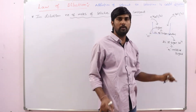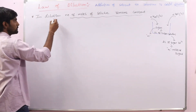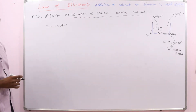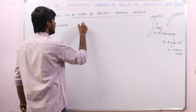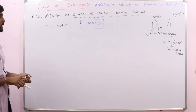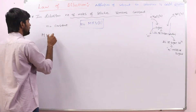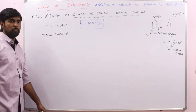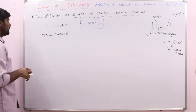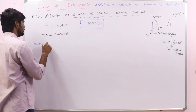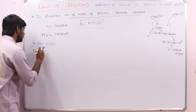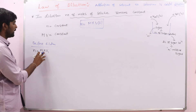So now we can write: number of moles of solute is equal to constant. Number of moles is not changing. We know this relation already discussed in the molarity concept: number of moles is equal to molarity multiplied by volume in litres. Now substituting here, in dilution M × V is equal to constant. Molarity changes and volume changes, but molarity into volume is constant. Before dilution, assuming molarity is M1 and volume is V1, we can write n = M1 × V1.